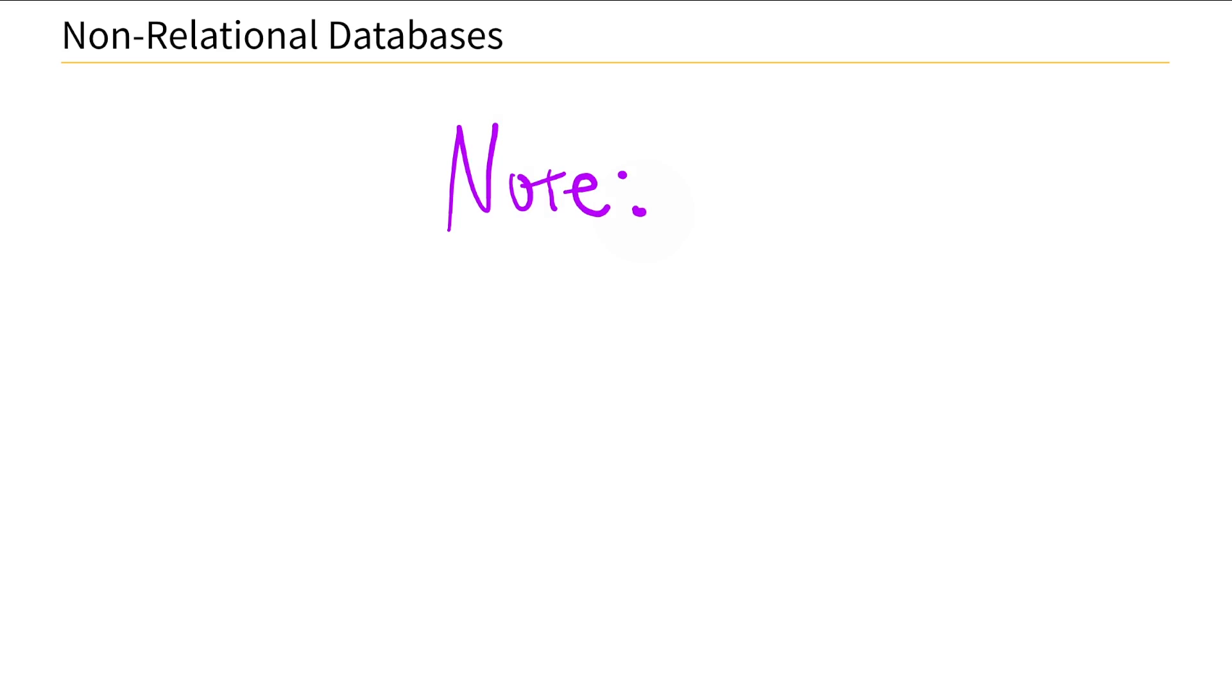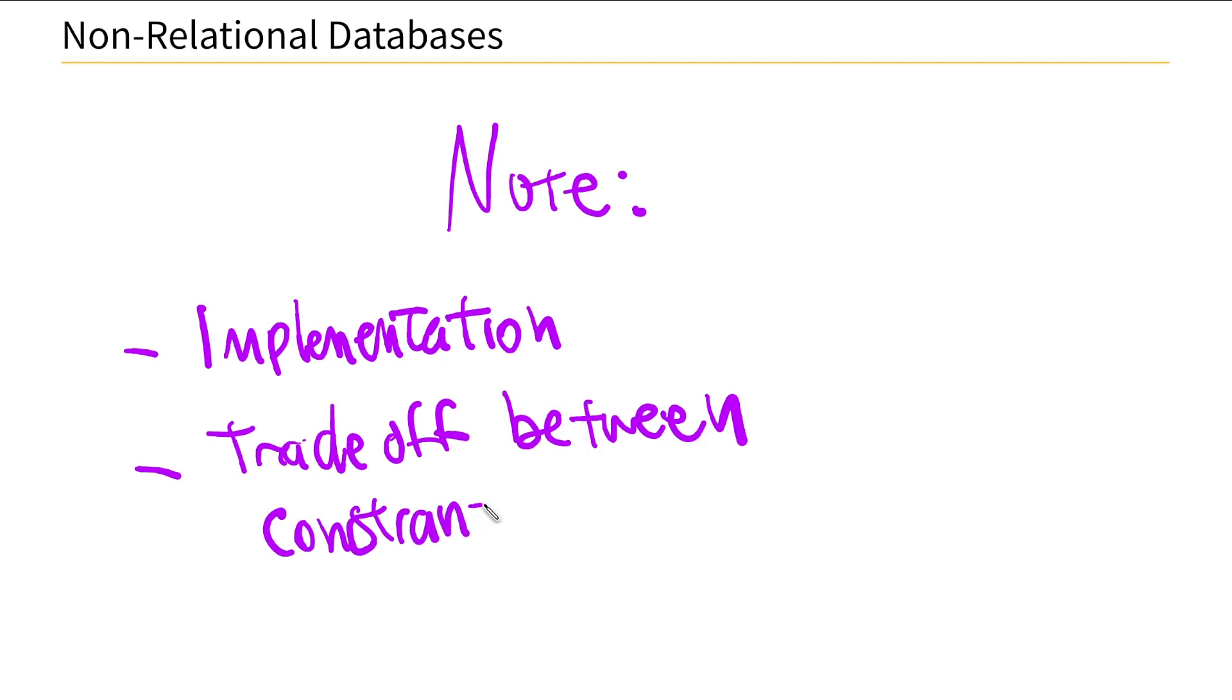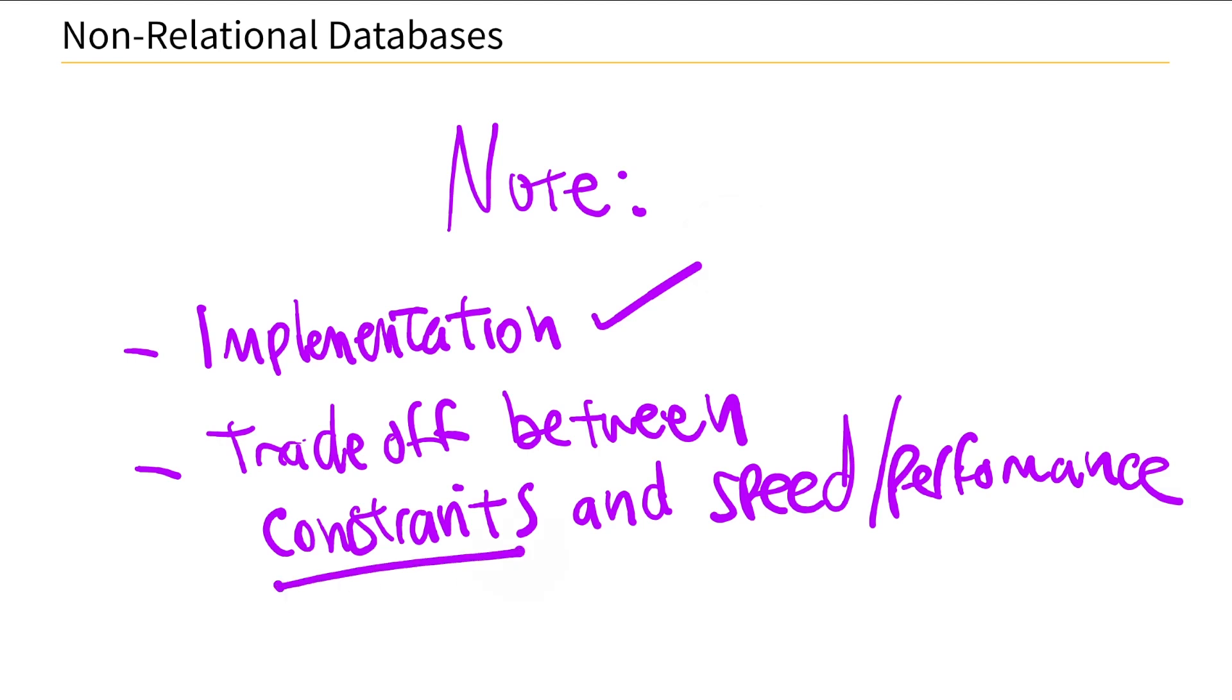So this is important. You don't need to know the implementation as much as the tradeoff between constraints and speed or performance. So you don't need to know how to implement. It's more important to know that you give up some constraints so that you can get some more speed and performance when you're using a non-relational database.